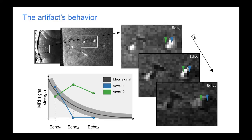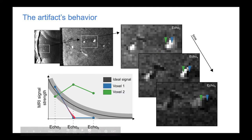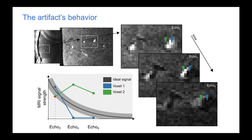This artifact's behavior can be observed as follows. First, have a look at the blue and the green voxels. Ideally, our T2* decay should follow the gray curve. However, in the blue voxel, which is in the middle of a big artery, the signal starts high and drops to very low very fast and stays very low, as you can see here. And in the green voxel, you can see that the signal jumps up in the second echo, which is unusual. If we measure T2* decay curves as such, we would have erroneous T2* fits later in the processing.